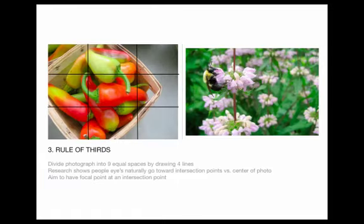I'm sure you guys have all heard of the rule of thirds. If you haven't, it's a simple rule but it makes a giant difference. The rule of thirds goes: if you break a photo into nine equal squares by drawing four lines, then the places where those lines intersect are the places where our eye naturally goes — and they've done research on this to show that it's true. If you line up your subject, or what you want the focus of your photo to be, with one of those intersection points, it just feels naturally easier to look at. So try that.